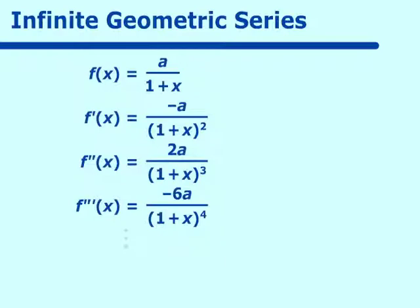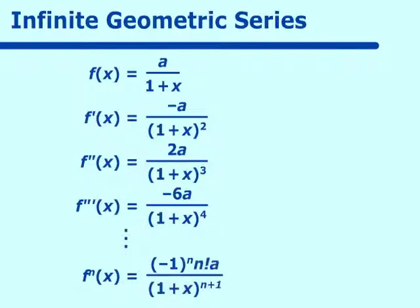F triple prime of x is equal to negative 6A over (1 plus x) to the fourth power. Continuing on, f to the nth derivative of x equals negative 1 to the nth power times n factorial A over (1 plus x) to the n plus 1. We use negative 1 to the nth power to handle the toggling of signs: if n is even it will be positive, and if n is odd it will be negative.